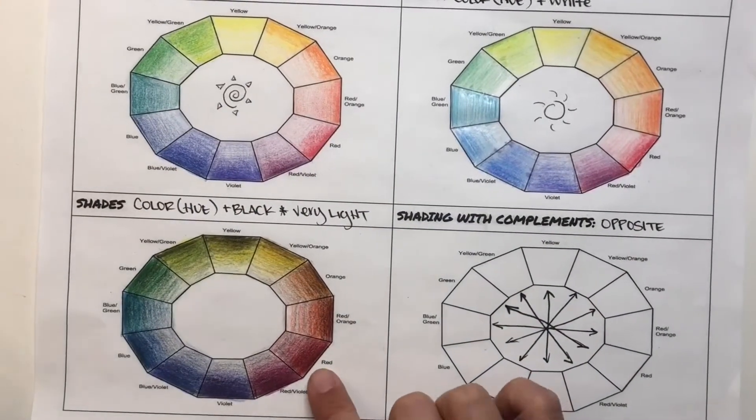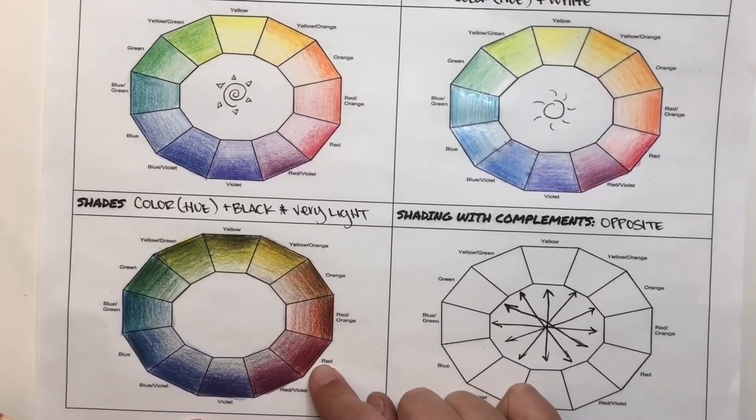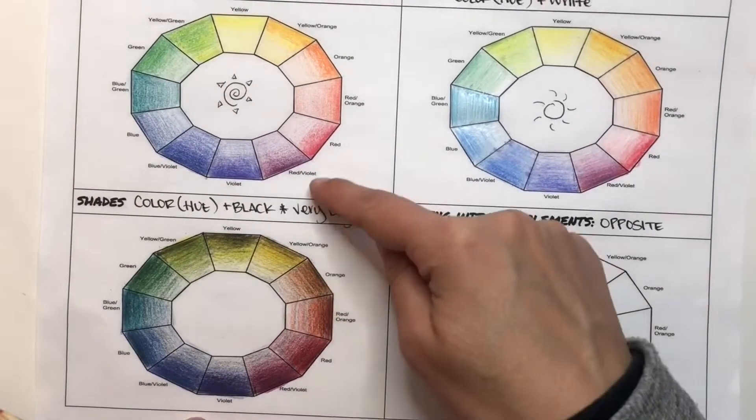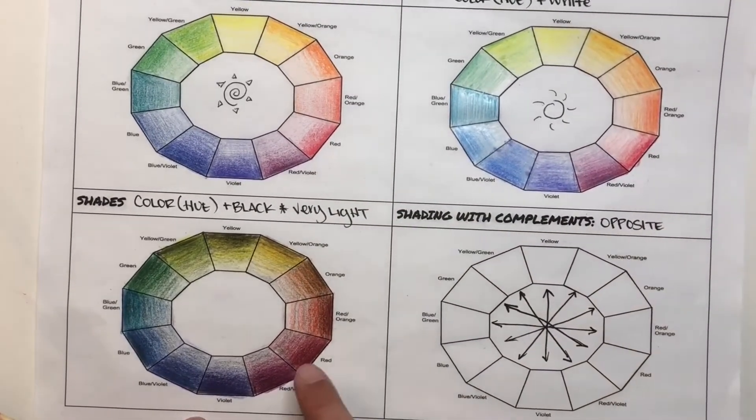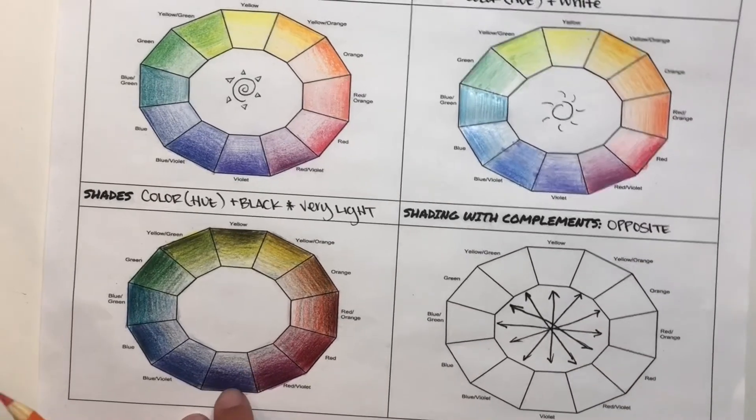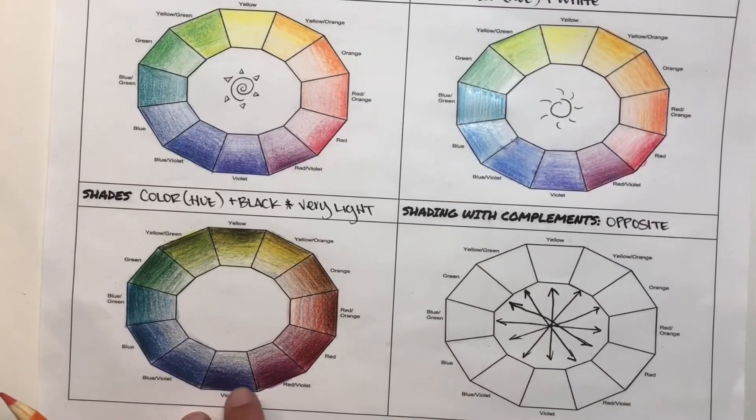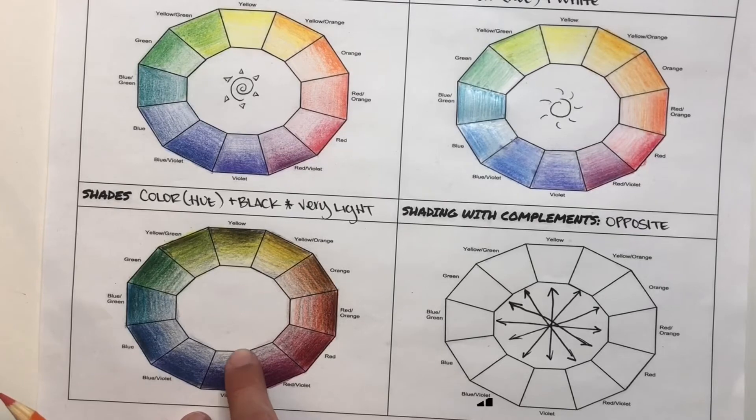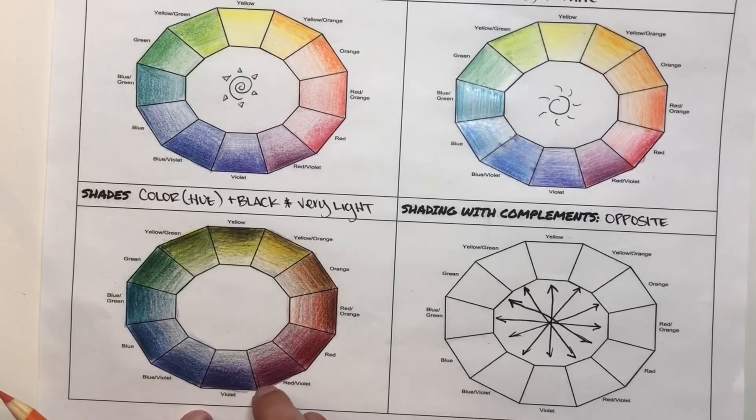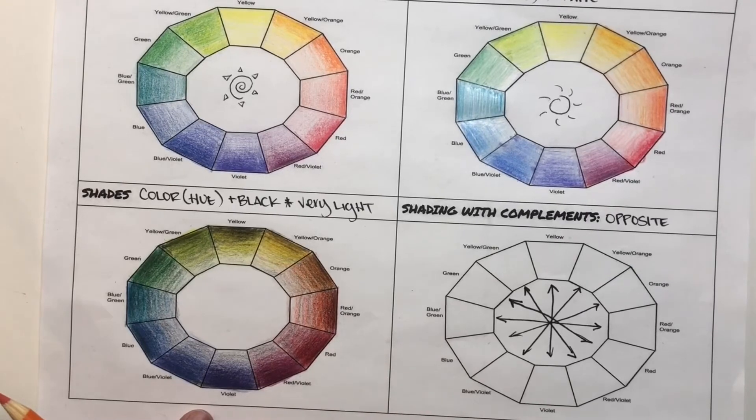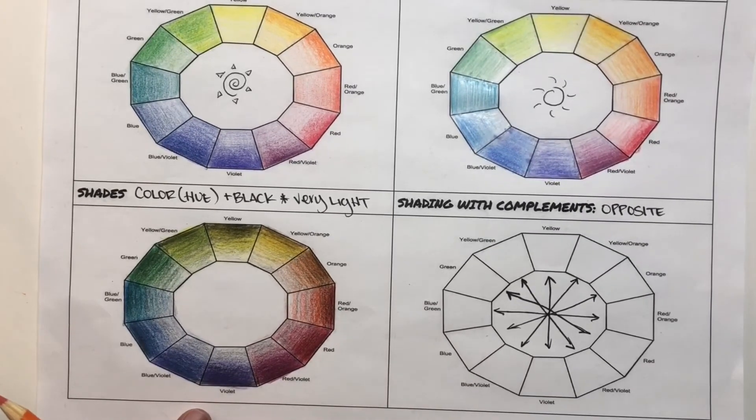So when you're done with your shaded color wheel, you should definitely notice that it is darker than both your hue and your tint color wheels. You should still have a value change, like you should still have a more saturated to a less saturated or a drier look over here. Make sure in this color you use absolutely no white. So this is just your hue and your black.